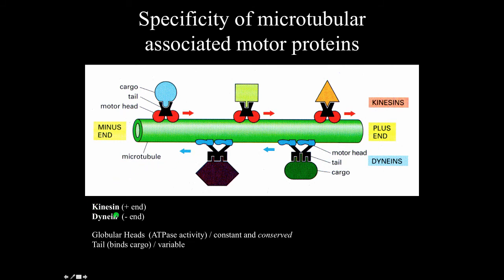There are two major microtubular motor proteins: kinesin and dynein. Kinesin moves cargo towards the plus end of microtubules. Both motors have conserved globular head regions with ATPase activity, while the tail region binds cargo and is highly variable — suggesting that the cargo transported by these motors is also variable.